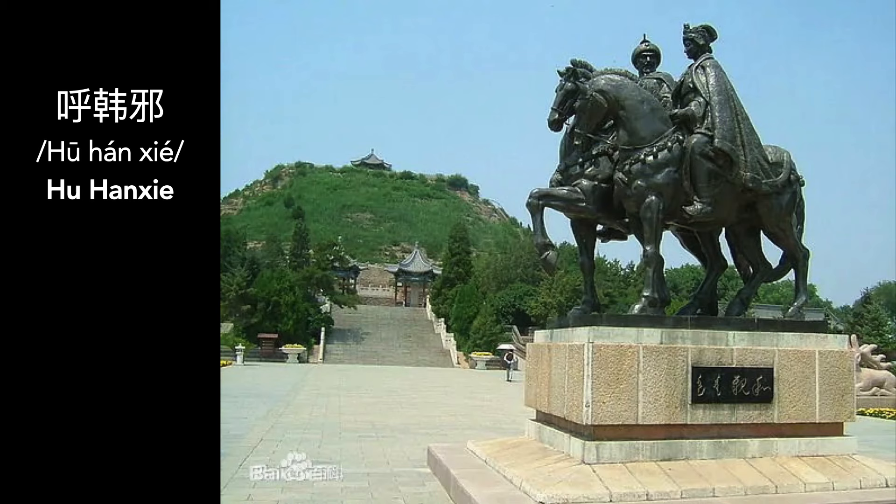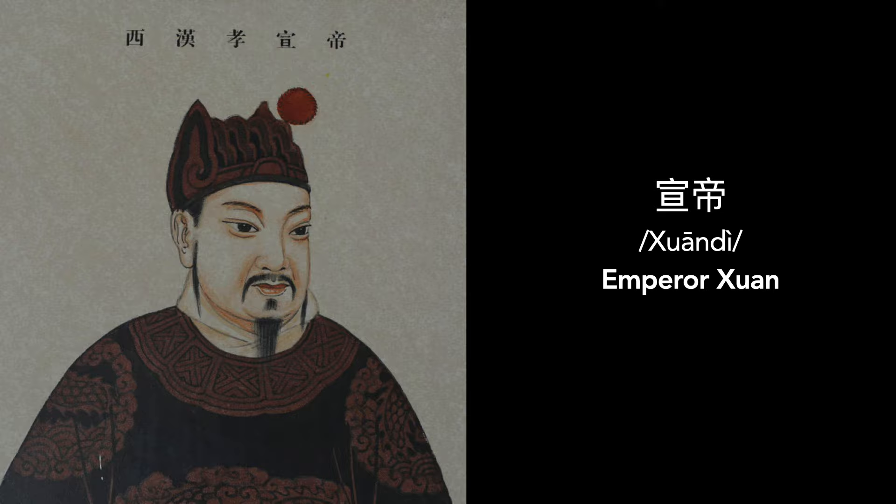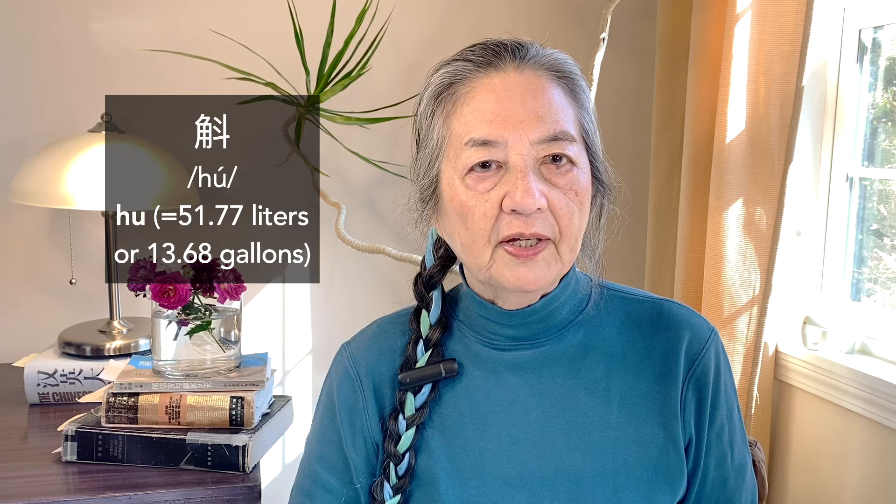Earlier in 33 BCE, the Xiongnu had internal conflicts between brothers fighting for the position of Chan Yu — the chieftain in Xiongnu's language. One of them, Hu Hanxie, escaped to the Han for protection and assistance. The previous emperor, Emperor Xuandi, welcomed him in person with a grand ceremonial reception. After assuring his safety to return as Chan Yu, the Han government sent 10,000 armed men led by two generals to accompany him, along with 34,000 hordes of grain, knowing the Xiongnu people were facing a food shortage.